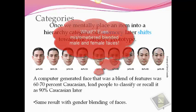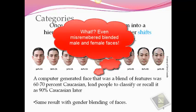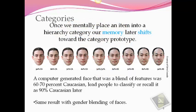In a similar study, the same results were found with gender blending of faces. Faces ranged from 90% male down to 50% male and then increasingly female. People misremembered more towards the prototype later on. So if it was a 70% or 60% female face, several weeks later they remembered that face as probably 80% or 90% female, and vice versa.